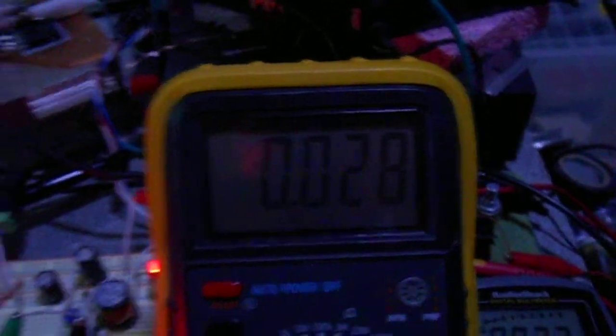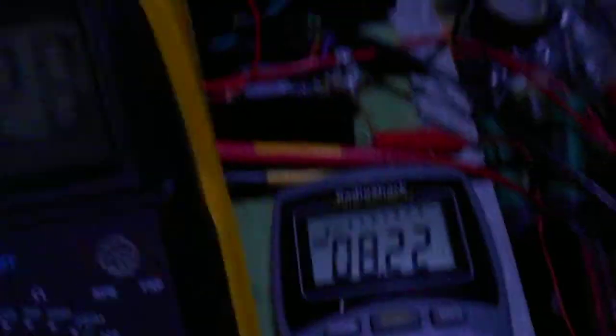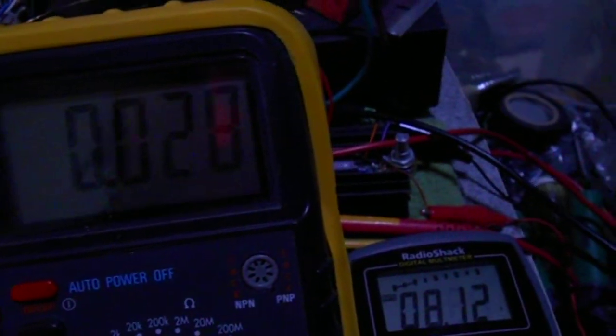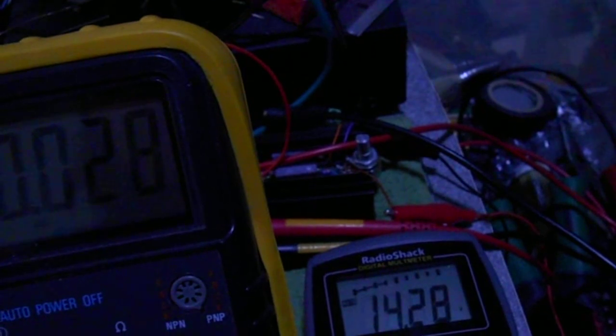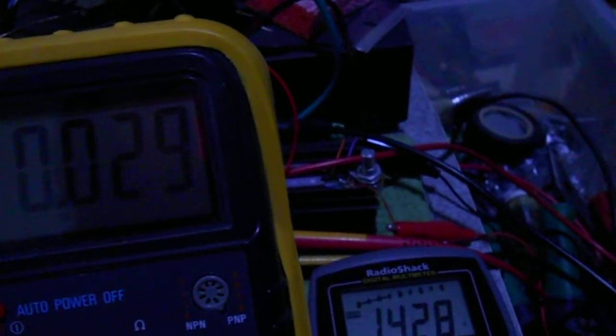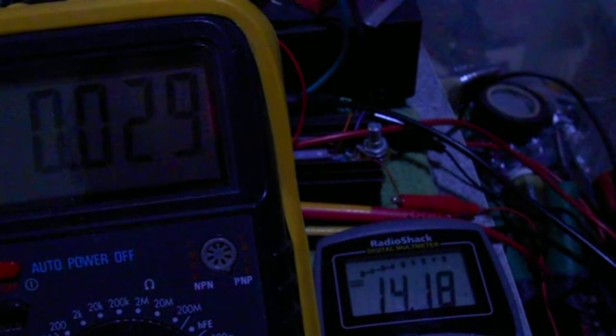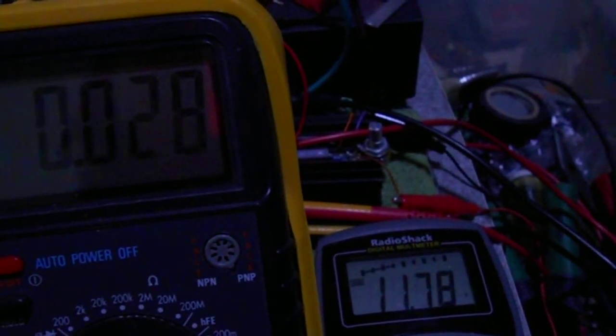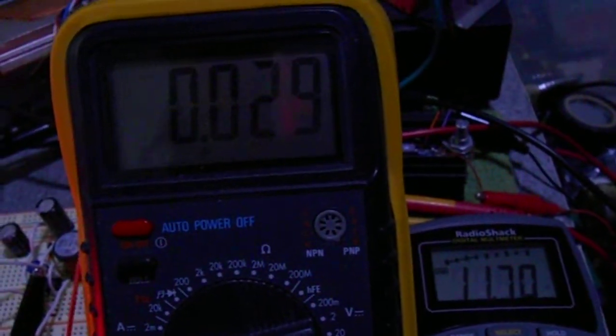So yeah, I'm going to show you that working. So 28 milliamps there through the LEDs. And then I can change the voltage without changing the current. See? Went up to 14. And obviously, if you go too low, then it'll drop the voltage. But you can do the same with a resistor.